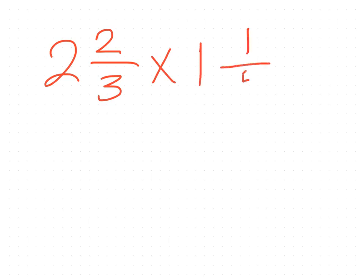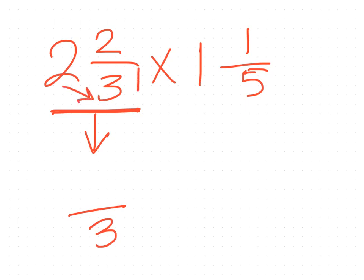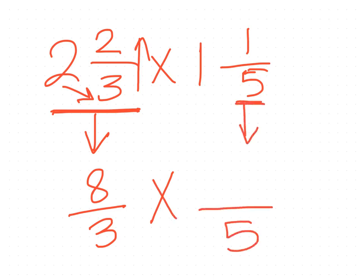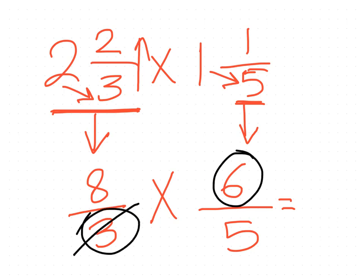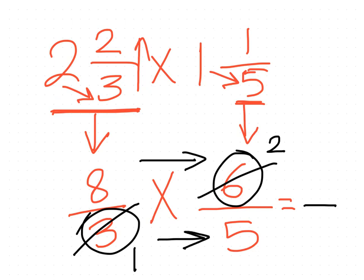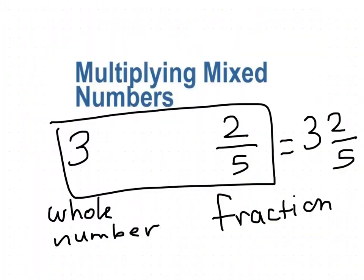If you want to multiply a mixed number by another mixed number, you have to convert each one into an improper fraction first. For example: 3 times 2 is 6 and add 2 is 8 over 3. Also convert the other: 5 and 1 gives 6 over 5. Check before you multiply if you can simplify: 6 and 3 are both divisible by 3 — 3 divided by 3 is 1, 6 divided by 3 is 2. Then multiply numerator by numerator, denominator by denominator: answer is 16/5. That's how to multiply mixed numbers. Thank you.